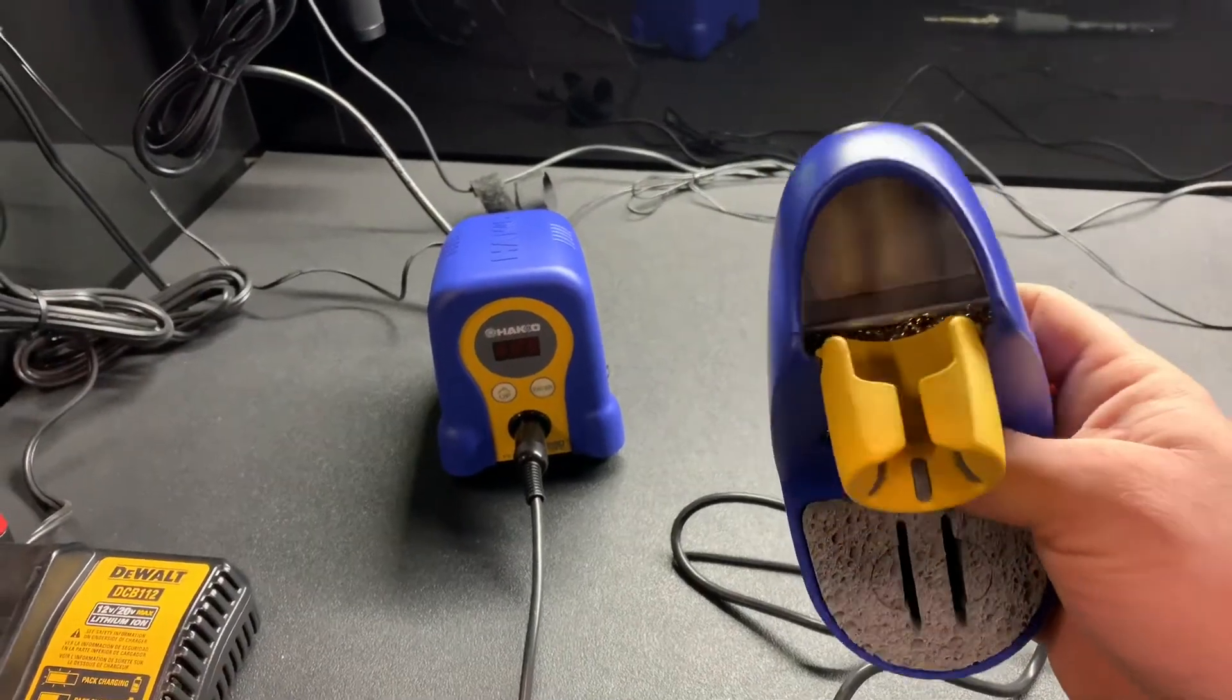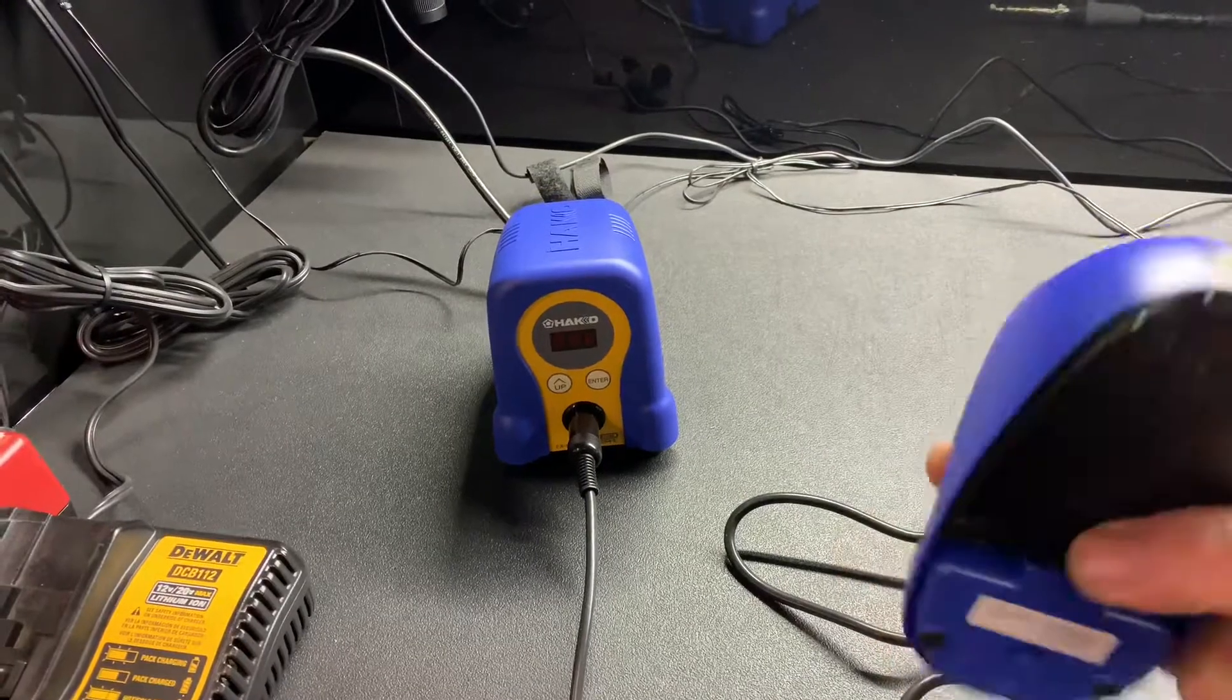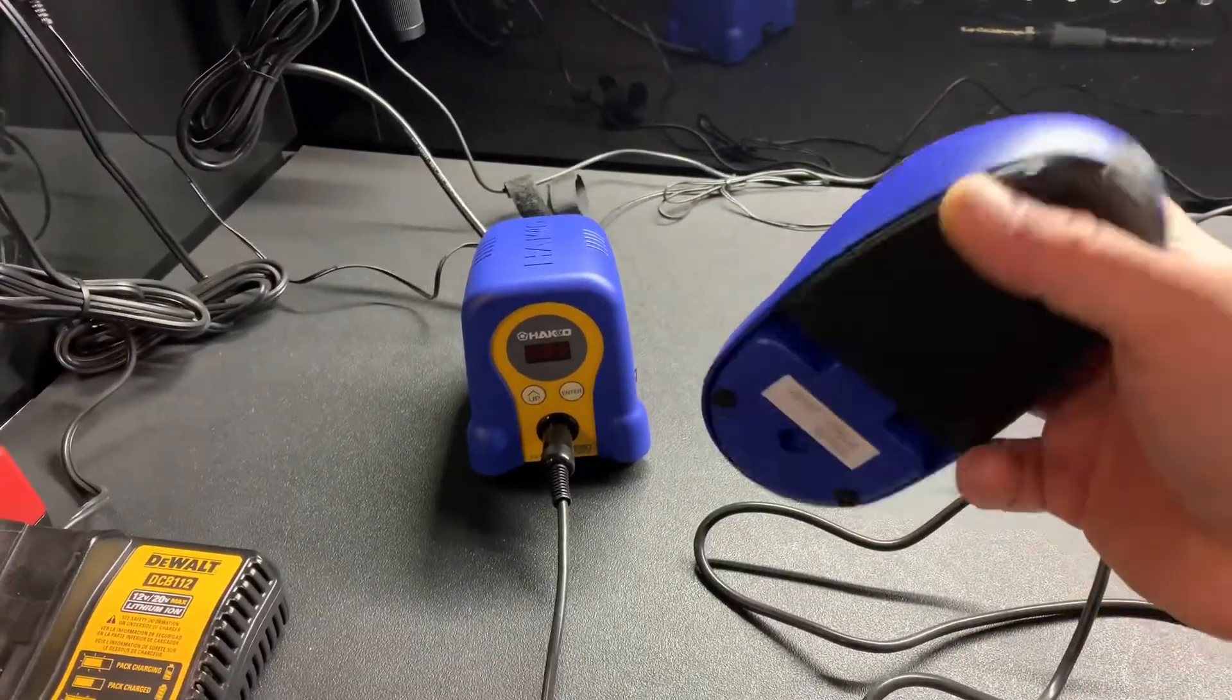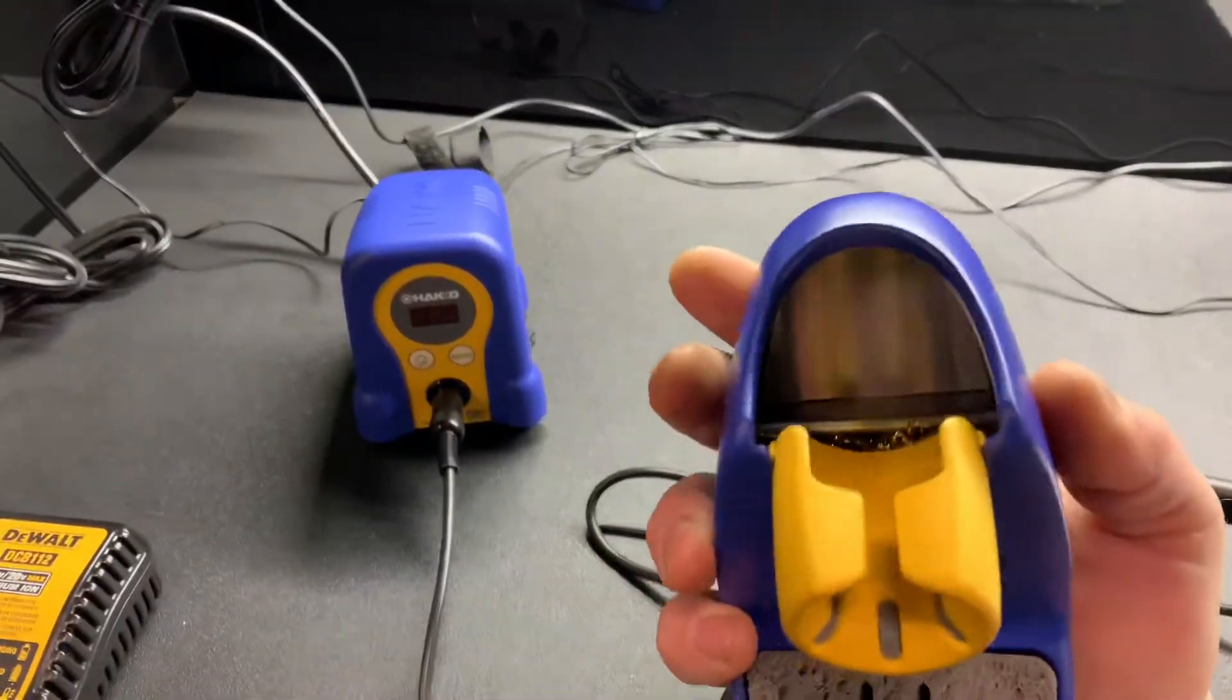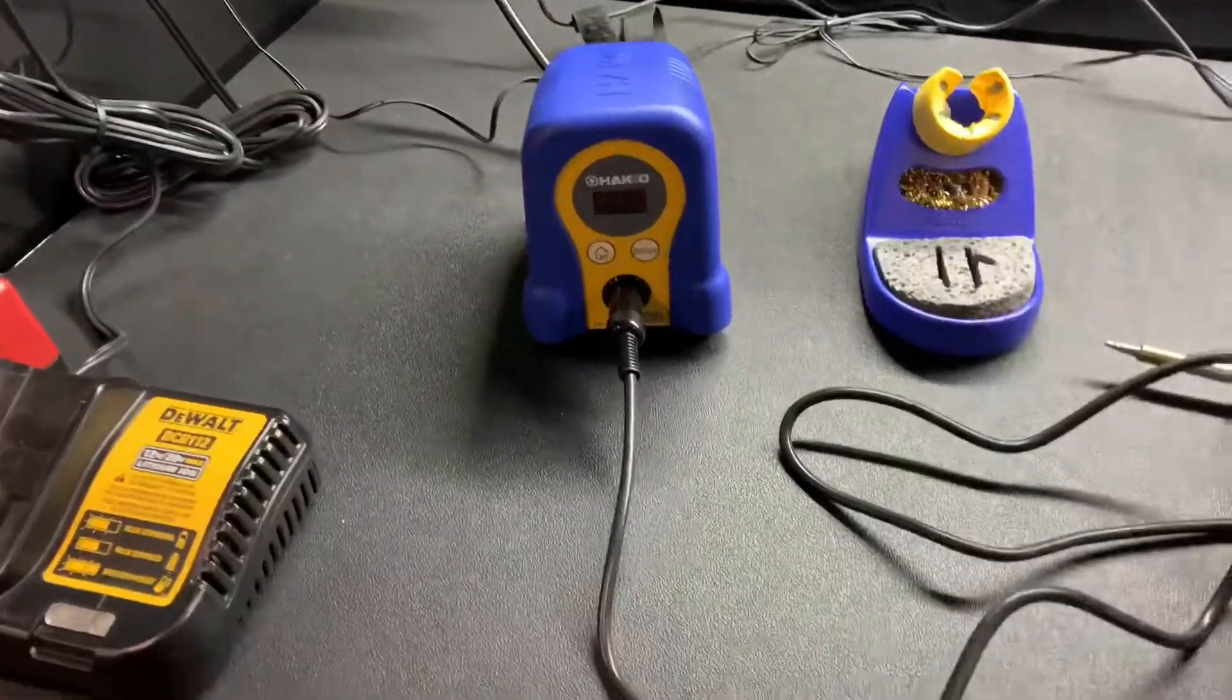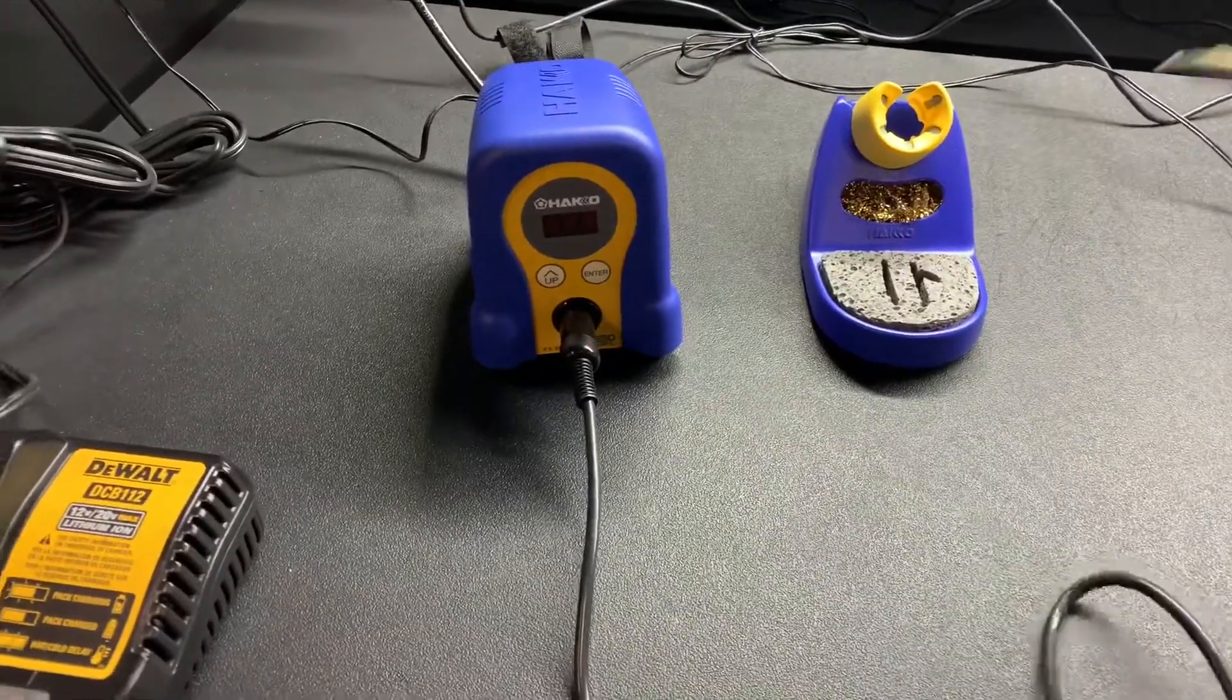One thing that's nice about this tray compared to a lot of other ones is here on the back it's got this little tab. You push this in and this whole bottom will come out to make cleaning up the inside of the tray and all that stuff very easy. If you get solder or just whatever, dust, anything down there that you want to get cleaned out, it makes it so much easier to do.